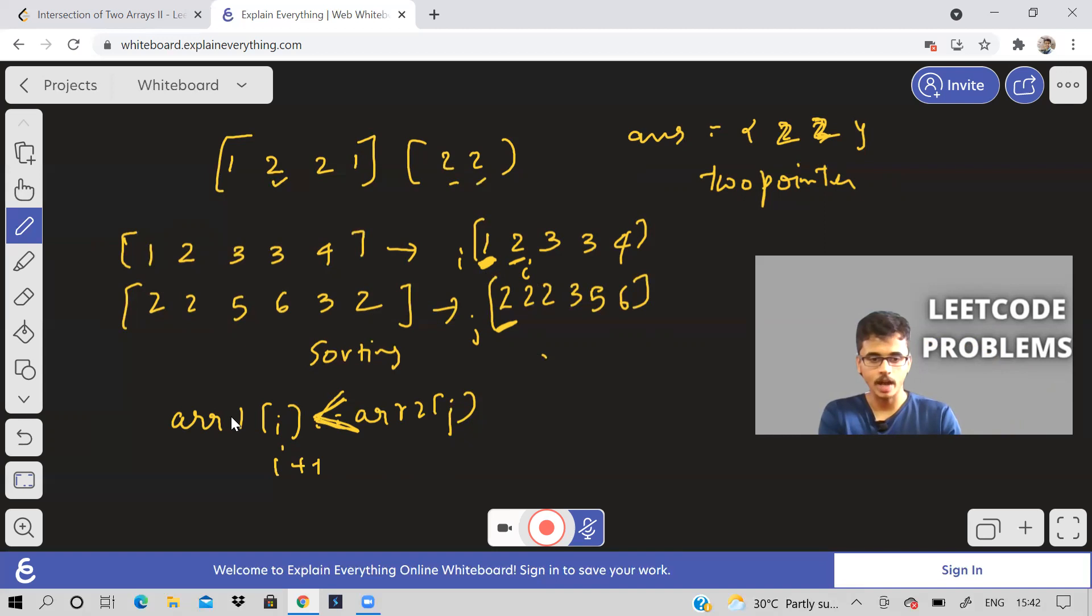That means see, now array one of I is equal to one and array two of J is equal to two, one is less than two. So that is why I'll move my I pointer so that because the elements of the array are sorted, I may end up getting a bigger number than one, which may be two. Then I can say, okay, two occurs in both arrays, I'll get intersection. That's what I meant.